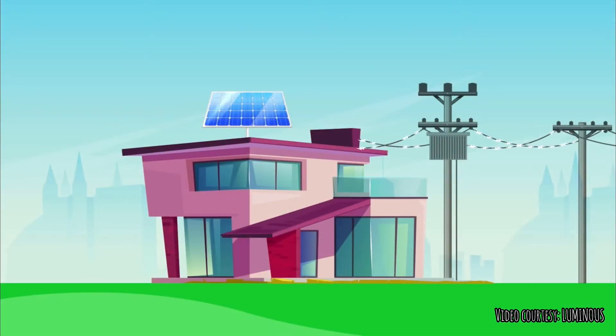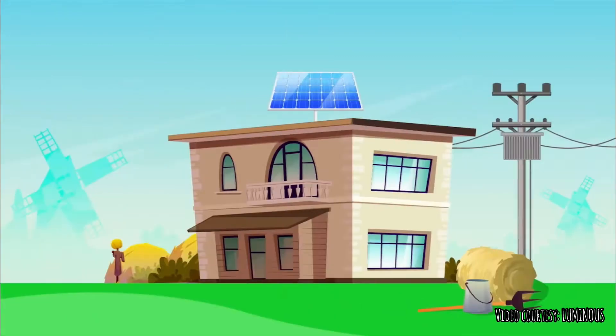The basic difference between the two is that on-grid works with the grid system, while off-grid works independently.